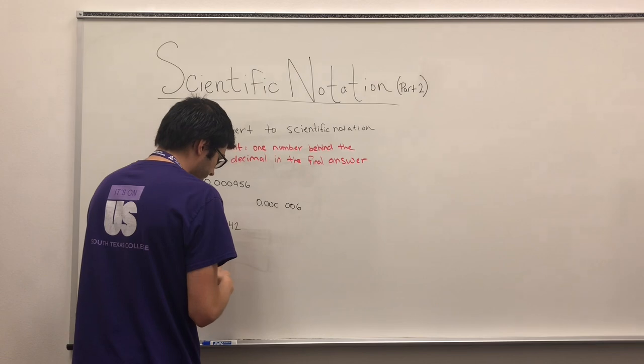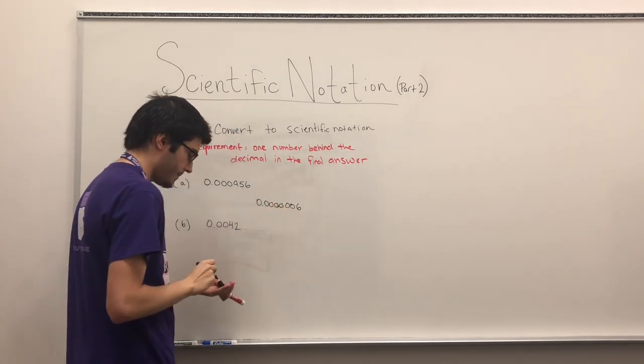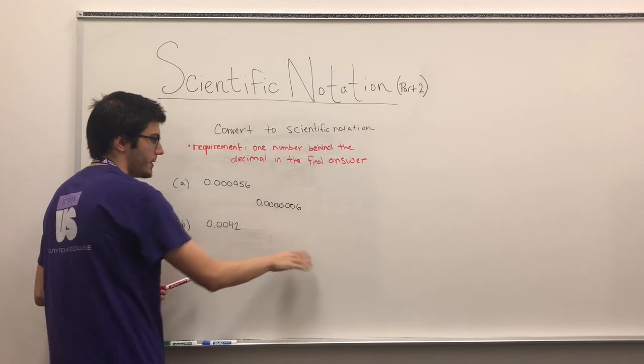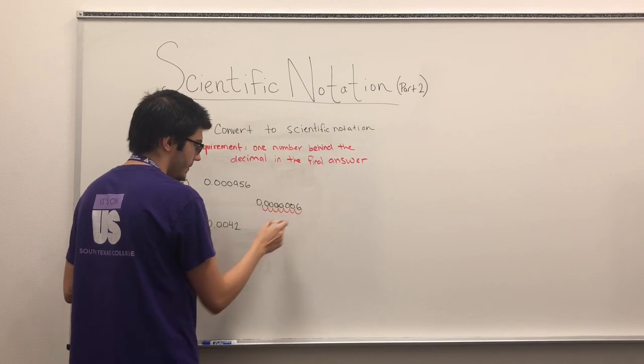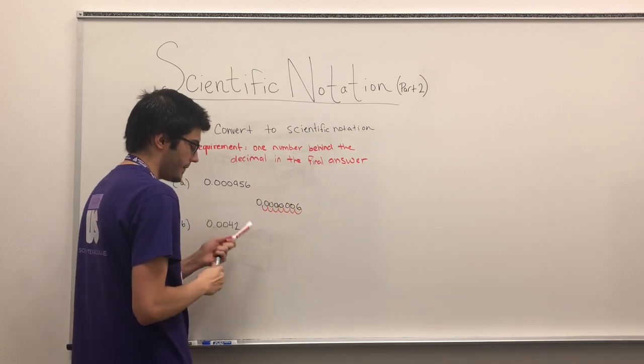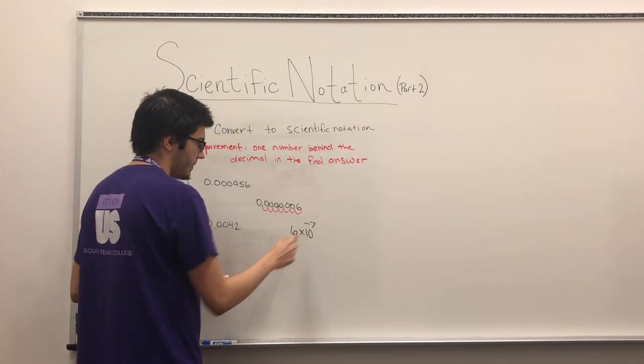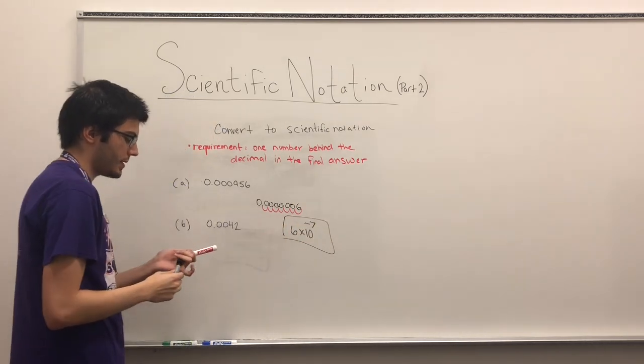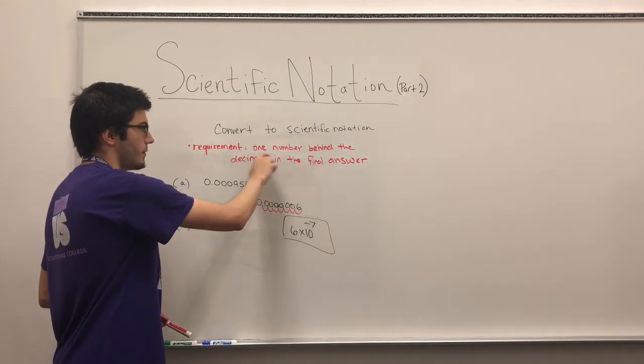One number behind the decimal in the final answer. And so when we did something like this, we would just count them. One, two, three, four, five, six, seven. And we would say six times ten to the negative seven. So notice that this fits the requirement of one number behind the decimal.